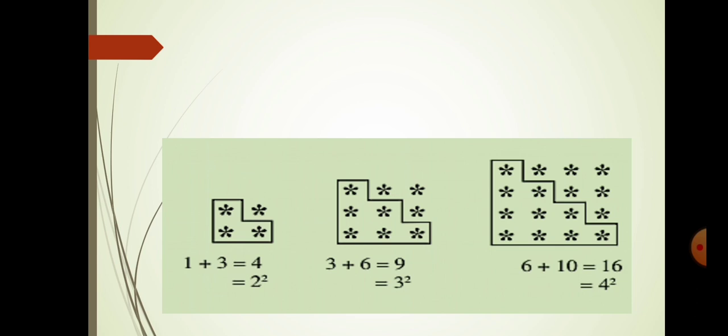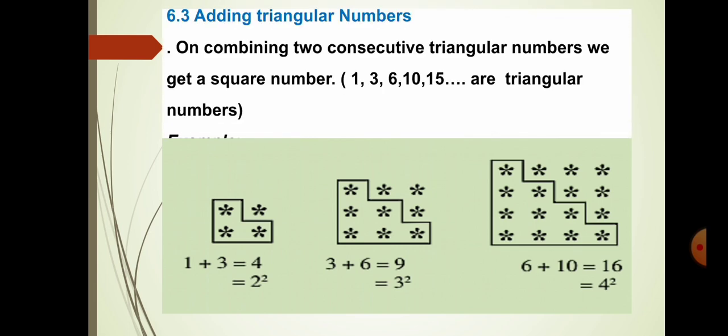Now moving on to a pattern. In previous classes we learned about triangular numbers: 1, 3, 6, 10 — these are all triangular numbers. When two consecutive triangular numbers are added, for example 1+3=4, 3+6=9, 6+10=16, we get square numbers. So on combining two consecutive triangular numbers we get a square number.